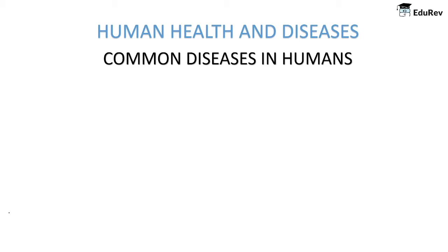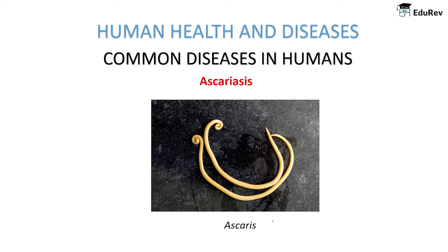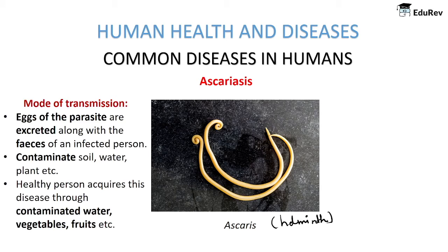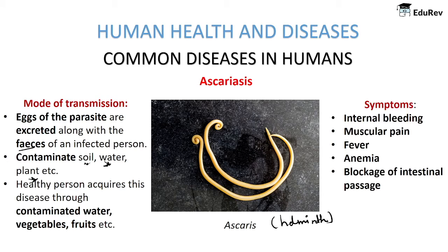Moving on to ascariasis, which is caused by a helminth known as Ascaris. Its mode of transmission is through eggs excreted along with the feces of an infected person, which contaminate soil, water, and plants. When a healthy person consumes contaminated water, vegetables, or fruits, they acquire this disease. Symptoms include internal bleeding, muscular pain, fever, anemia, and blockage of the intestinal passage.